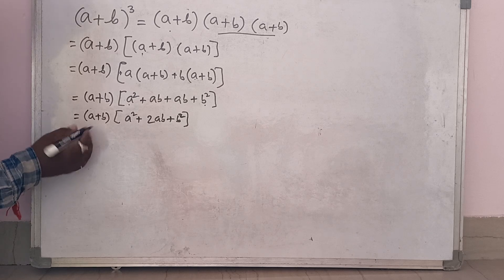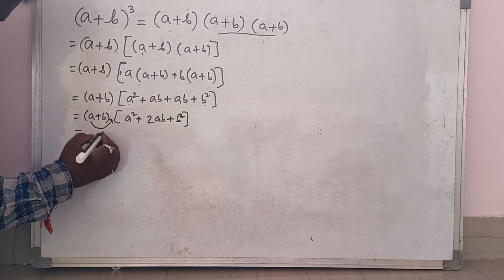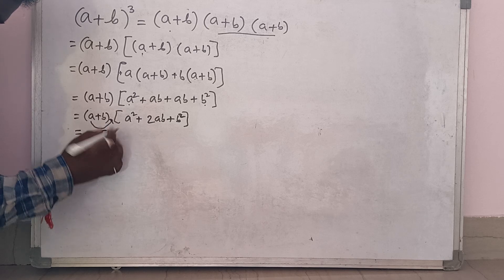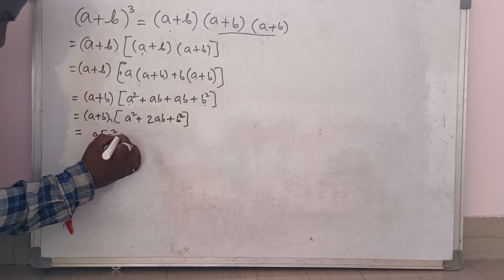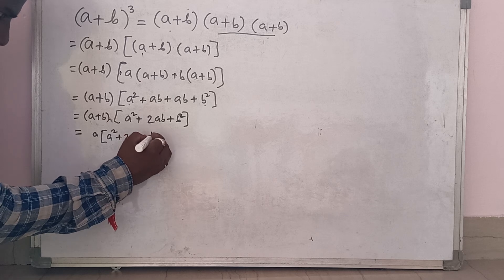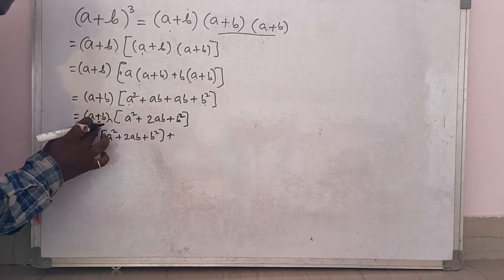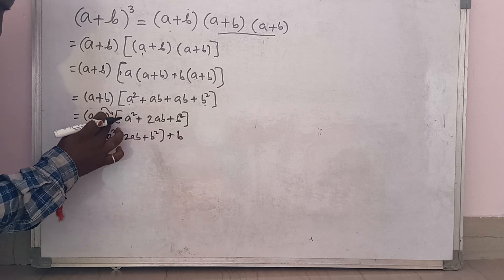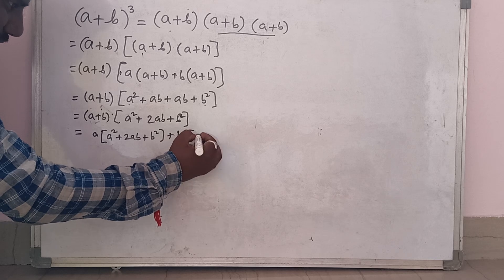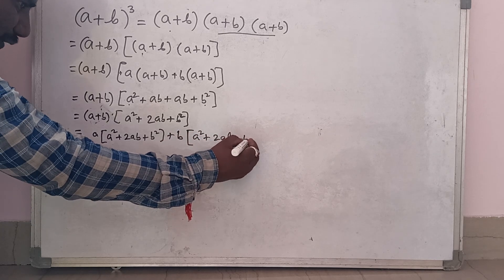Now this a is multiplied to this bracket. What is the bracket? A square plus 2ab plus b square. This term over — plus sign here — plus b into the whole bracket. What is the bracket? A square plus 2ab plus b square.